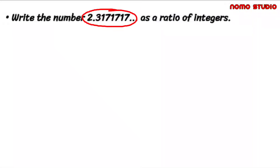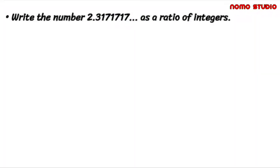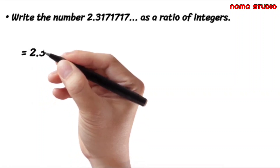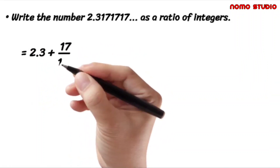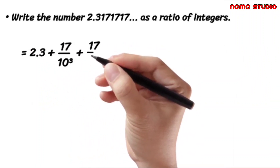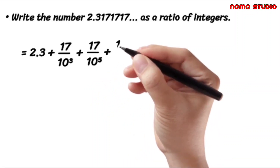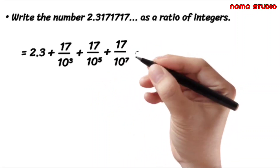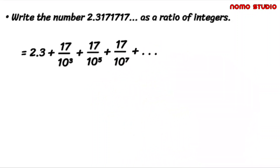To solve this, we need to rewrite this in the form of a geometric series. So we have 2.3, plus 17 over 10 cubed, plus 17 over 10 to the power of 5, plus 17 over 10 to the power of 7, and so on. Observe that we separate the portion of the number that doesn't repeat from the portion that is repeating.